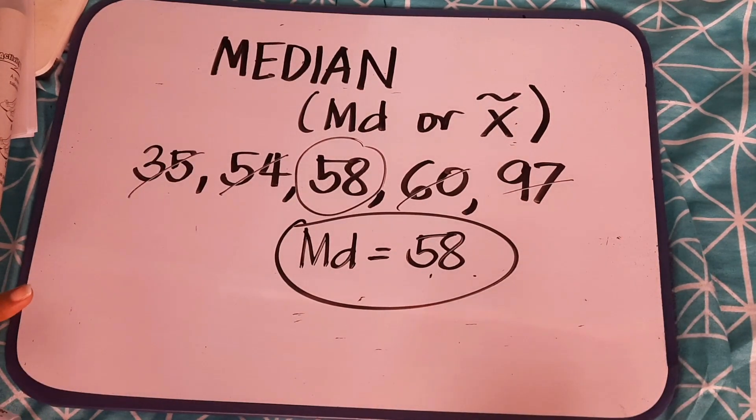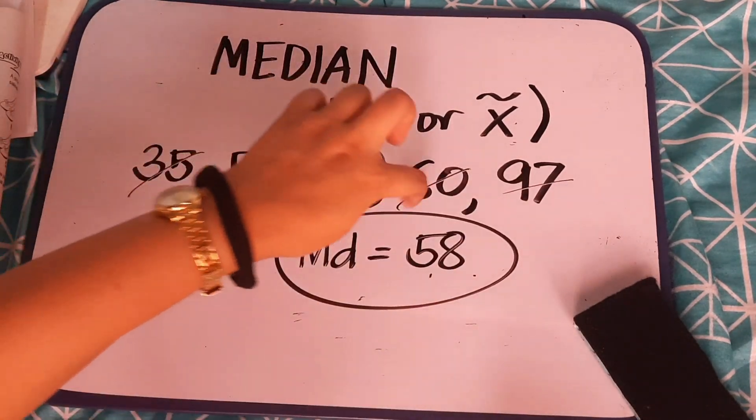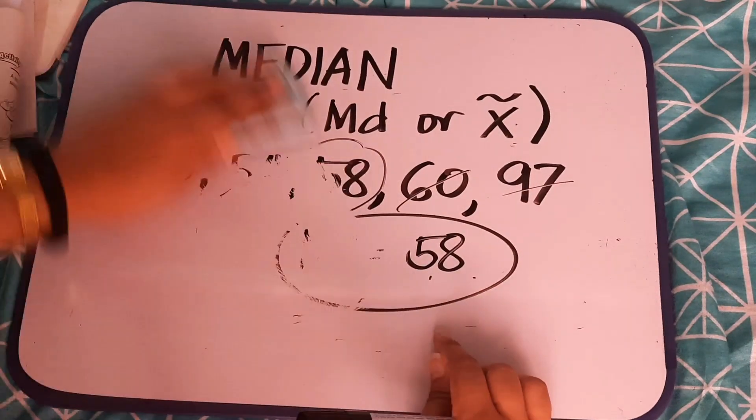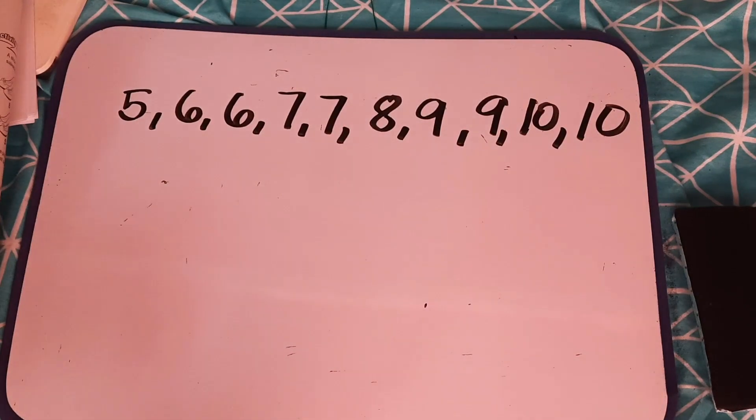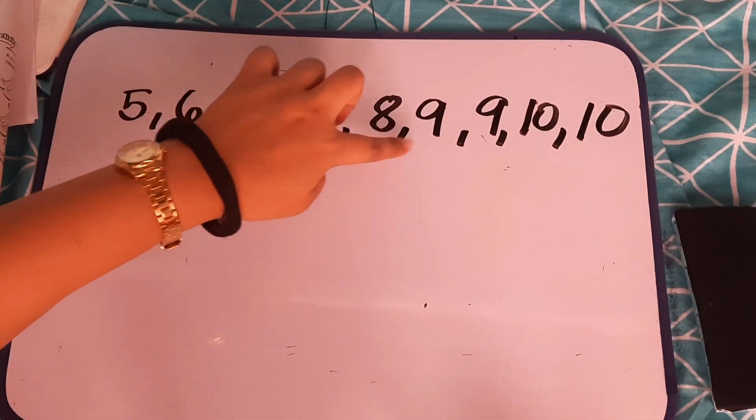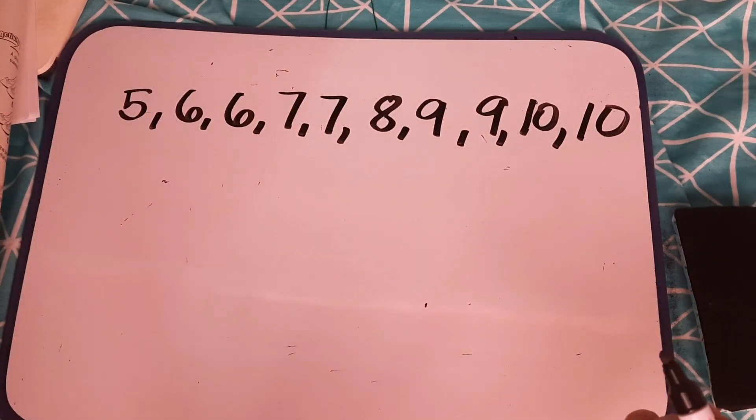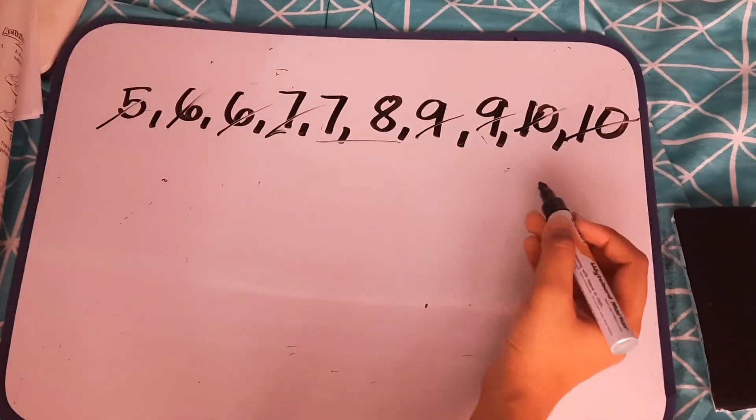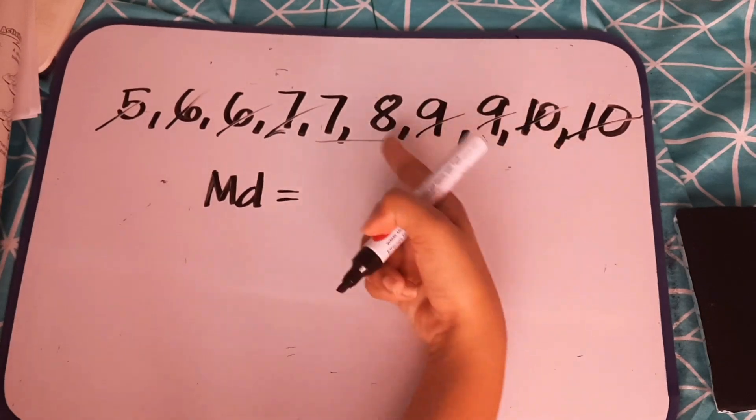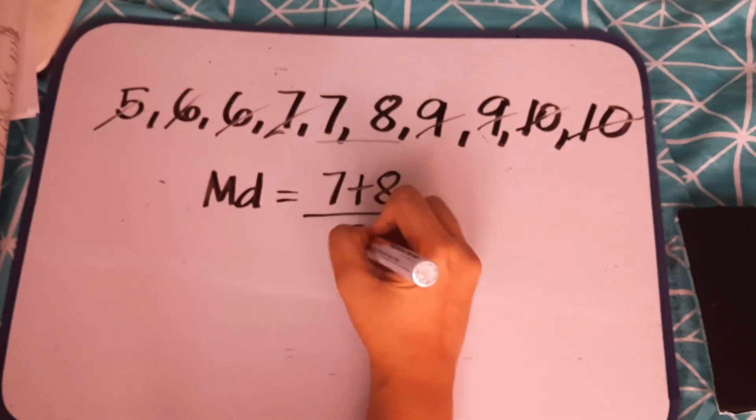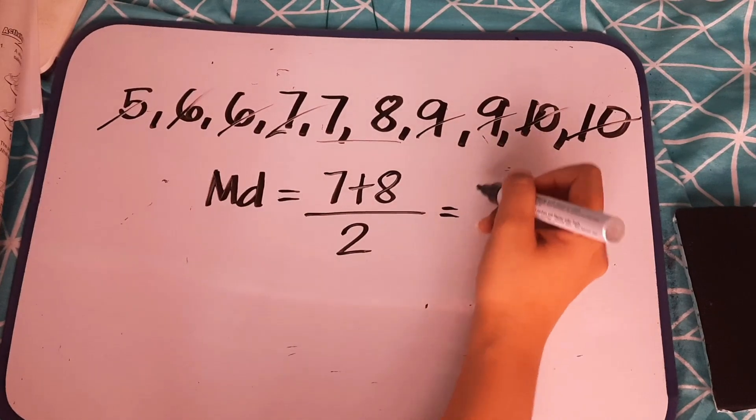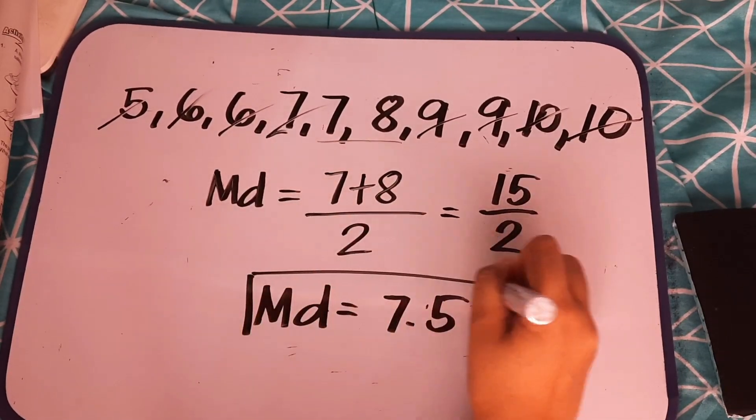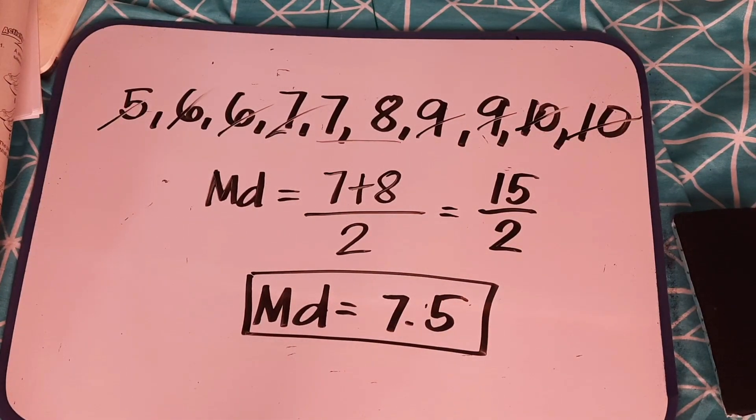Now, paano naman yung sinasabi ko sa inyo na, paano kung hindi siya odd numbers yung value? For example, 1, 2, 3, 4, 5, 6, 7, 8, 9, 10. So, sampung ngayon yung ating given. Ano ang middle value? Alam mo na ito ay dalawang, 7 at saka 8. So, to get the median, you have to get the average of 7 and 8. So, 7 plus 8 divided by 2. Bakit divided by 2? Kasi dalawa yung naandun sa gitna. So, that is 15 divided by 2. We have the median, which is 7.5. This will be our median.